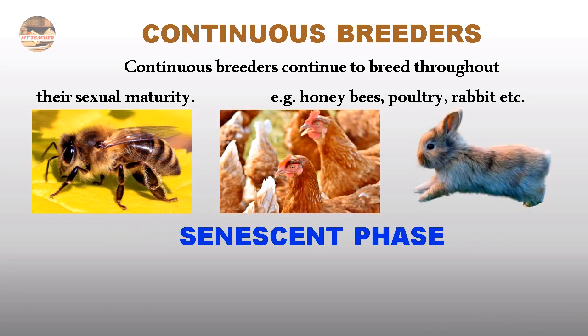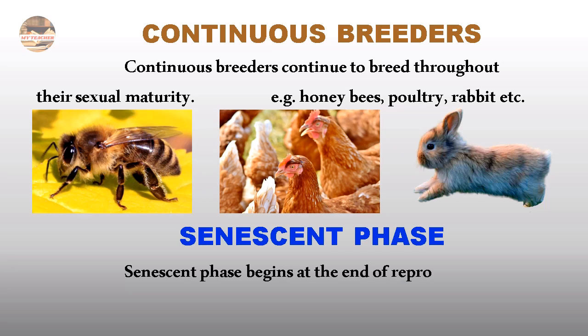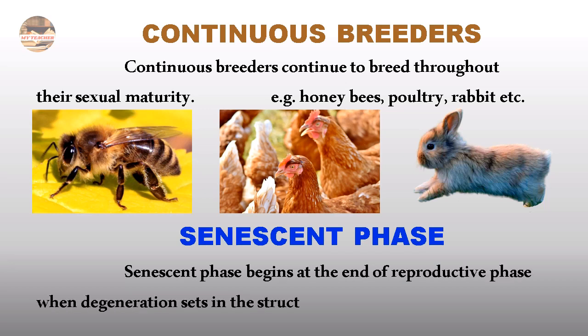The third phase is the Senescent Phase. The Senescent Phase begins at the end of the reproductive phase, when degeneration sets in the structure and functioning of the body.